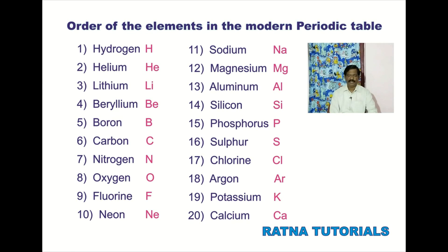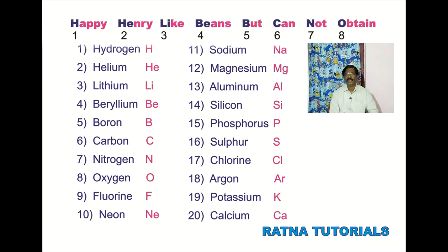In the same way, seeing this order we can say the number of protons and electrons inside the element. In hydrogen there is only one proton and only one electron. In helium there are two protons and two electrons. In lithium, the third element, there are three protons and three electrons. And then in beryllium there are four protons and four electrons. If we know the order, we can say the atomic number and the number of electrons and number of protons.